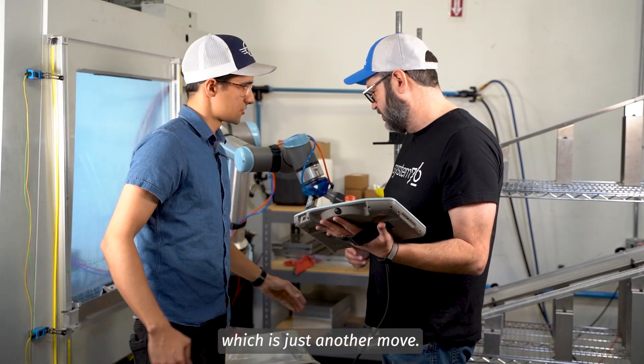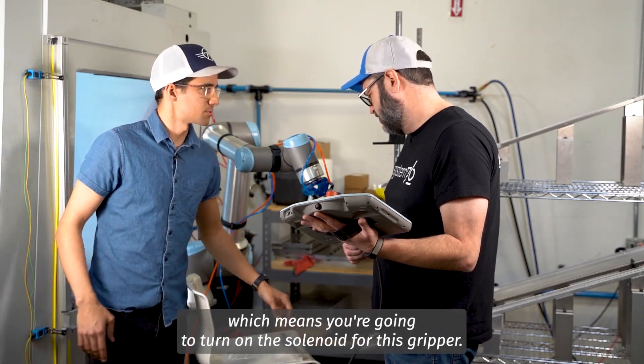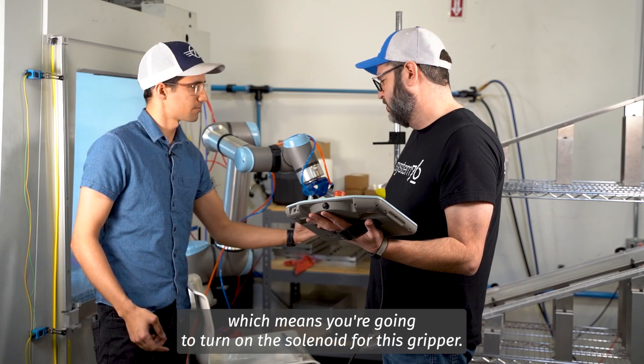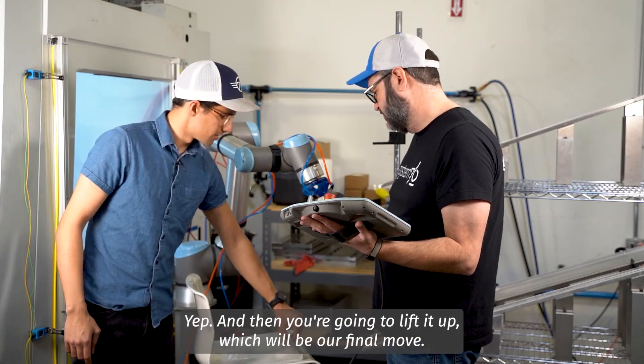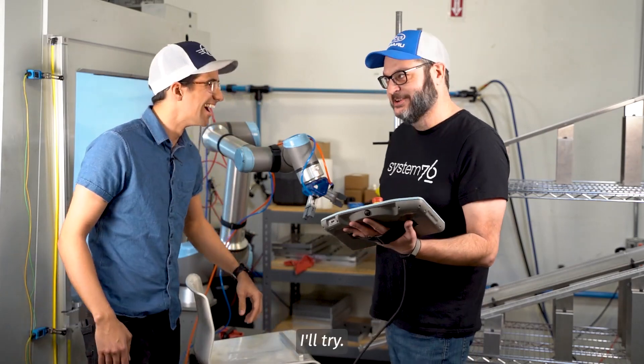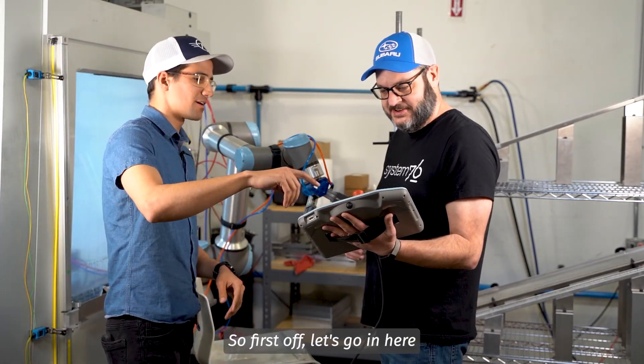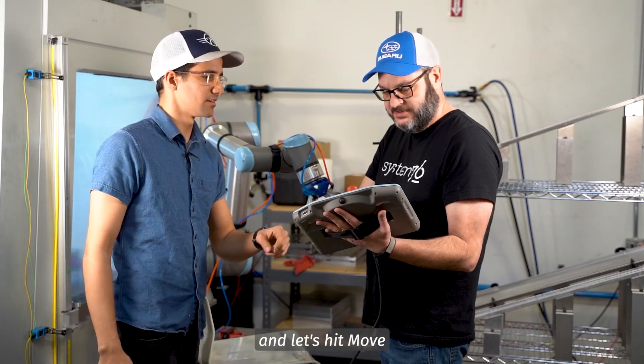You're going to teach it an I/O, which means you're going to turn on the solenoid for this gripper to grab it. And then you're going to lift it up, which will be our final move. Okay, I'll try. I believe it. So first off, let's go in here and let's hit move.